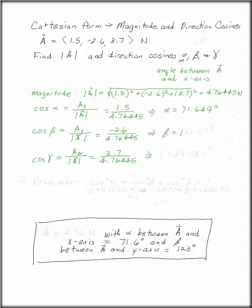You can solve each of these for beta and gamma. Beta is 123.07 degrees, and gamma is 39.051 degrees.